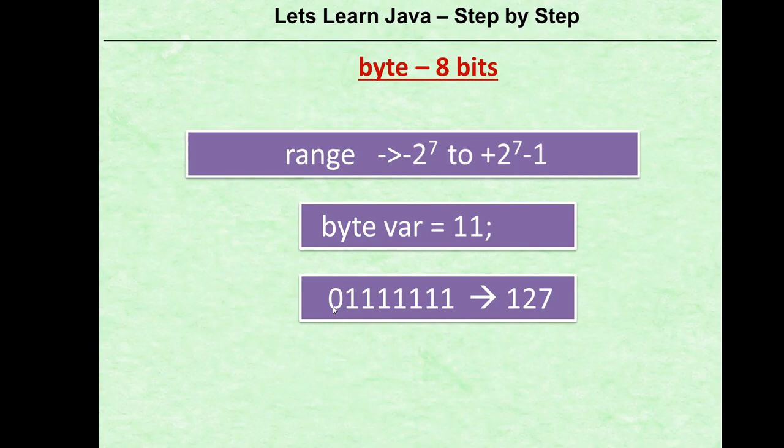If we consider an unsigned variable — which is not in Java, but just for knowledge — what would the range be? With an unsigned variable, there is nothing on the negative side, and all bits contribute to the value. So the range would be 0 to 2 to the power 8 minus 1, which comes out to 0 to 255.